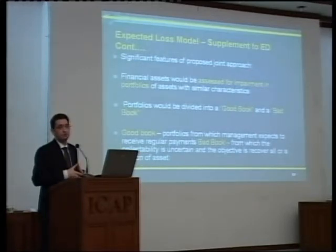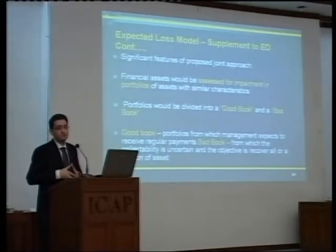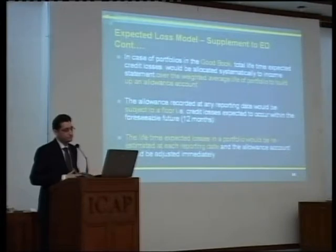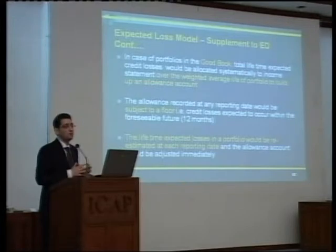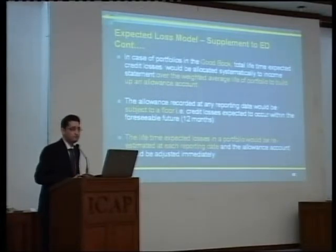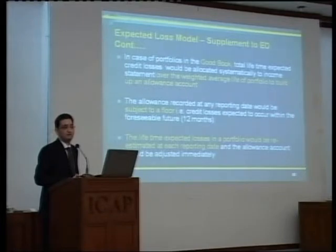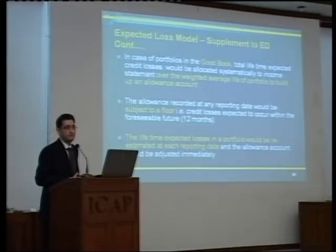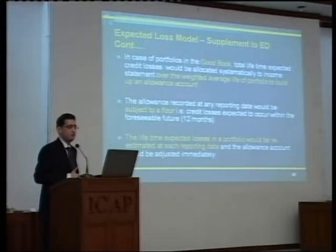A good book means all loans and portfolios where you expect regular repayments — good portfolio, performing portfolios — and a bad book, which is NPLs, non-performing portfolios. For a good book, what you need to do is develop an expectation: what is your expected credit loss from the whole portfolio? Say it comes to an X amount — the expected credit loss from that portfolio over time. So you divide that expected credit loss over the term of the portfolio. For example, the weighted average life of the portfolio is five years, so you divide by five and book the one-year charge each year. You can divide that expected loss on a straight-line basis over the weighted average life of the portfolio so that a journal provision or allowance is built up on a good book each year.